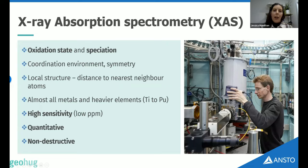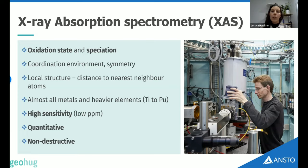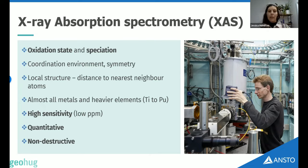X-ray absorption spectroscopy tells us about the oxidation state and the speciation of an element. We see chemistry from the perspective of the element we're analyzing — we're sitting in the position of that element and can figure out its state, but also sometimes identify the local structure around it. We can tell whether it's bonded to oxygen atoms or sulfur atoms and how far away those atoms are, and build up a picture of the chemistry that way.